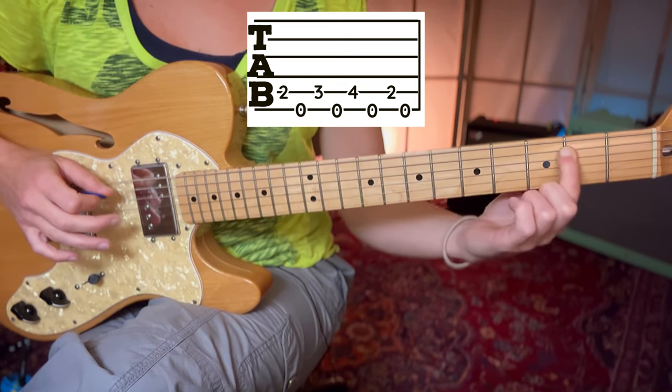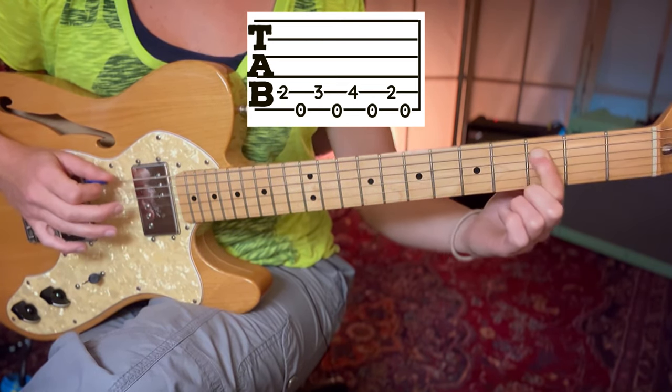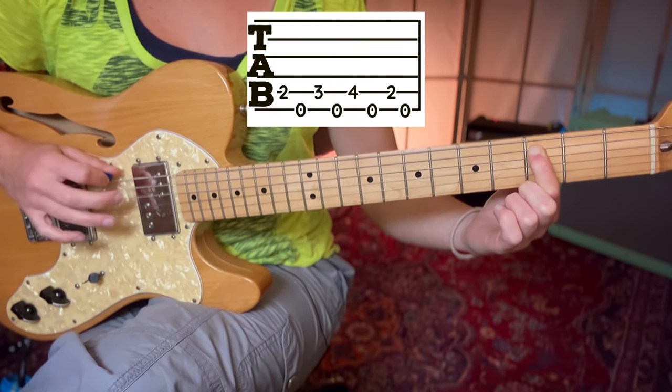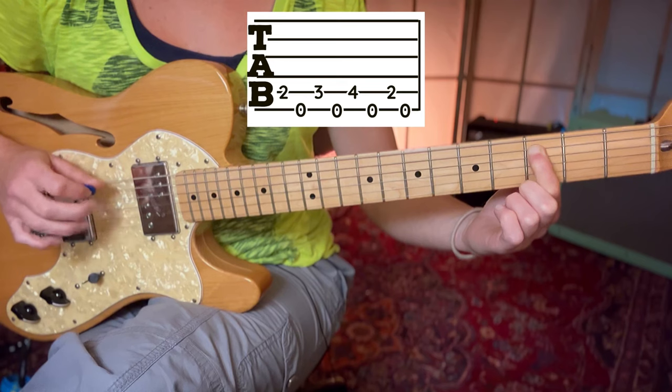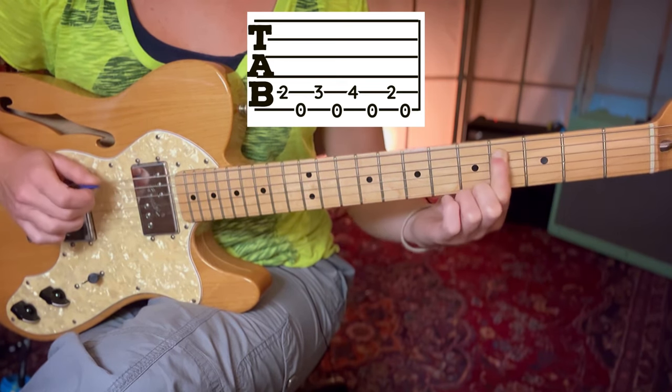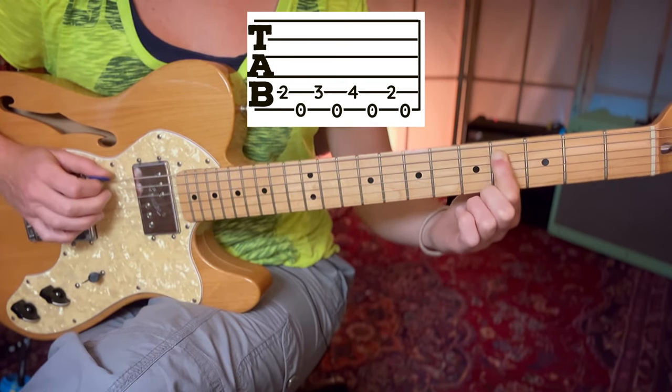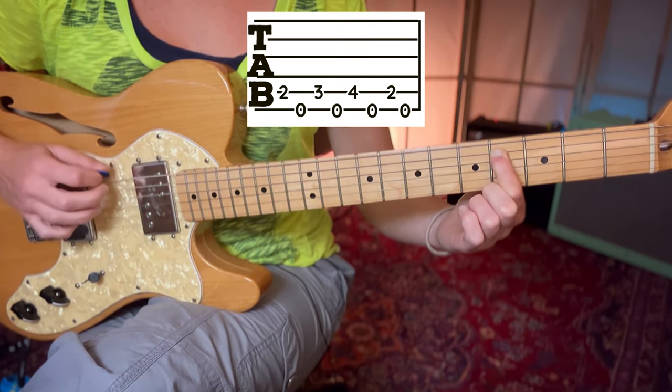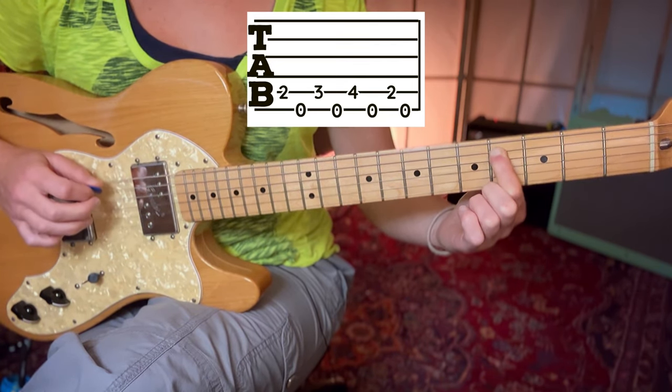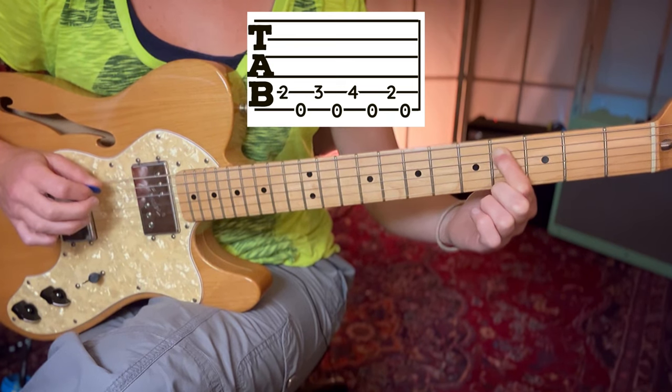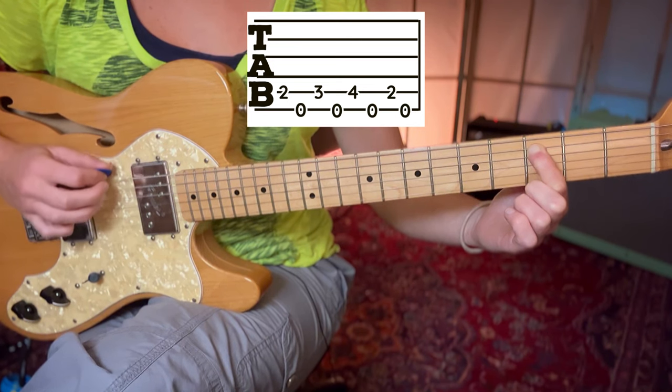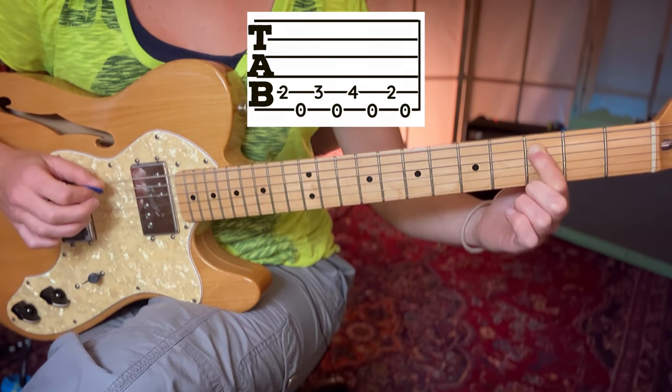The index finger moves up to the third fret of the A and plays that. We then pick the open E string again. The index finger goes to the fourth fret of the A string. We pick that and then return again with the pick to the E string. And the index finger returns to fret number three. Play that and then we return to the open E string.